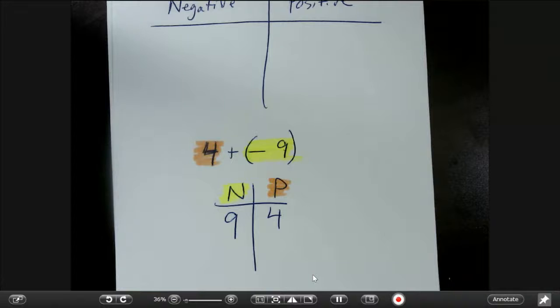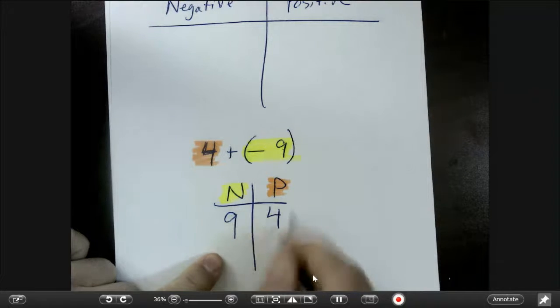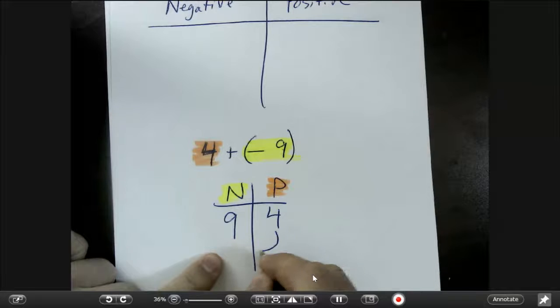Which team won? Well, the team that won has the larger score. So whichever team was the smallest, so in this case, the positives, they have to cross over.